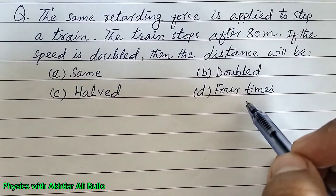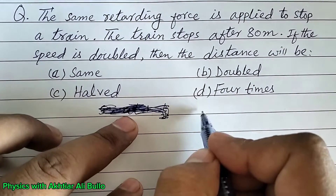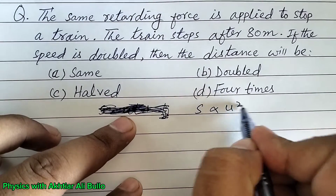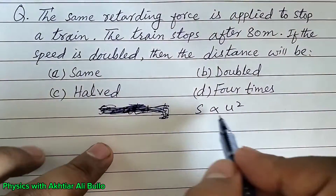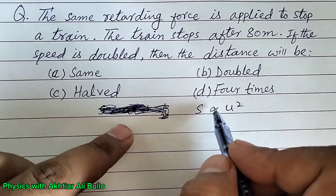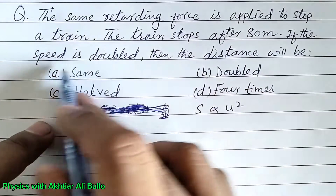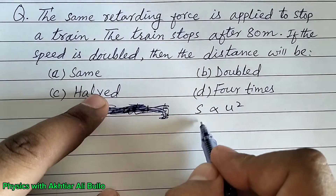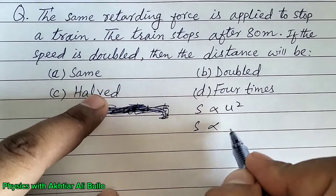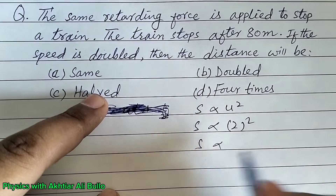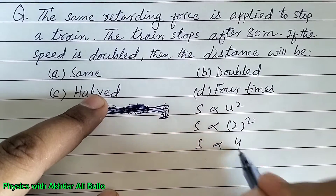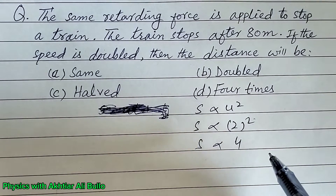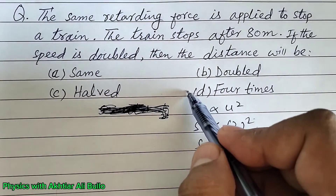S is directly proportional to U squared, meaning the square of the speed. So if the speed is doubled, then the distance will be the square of 2, which is 4. So the distance will be 4 times. The correct option is D: four times.